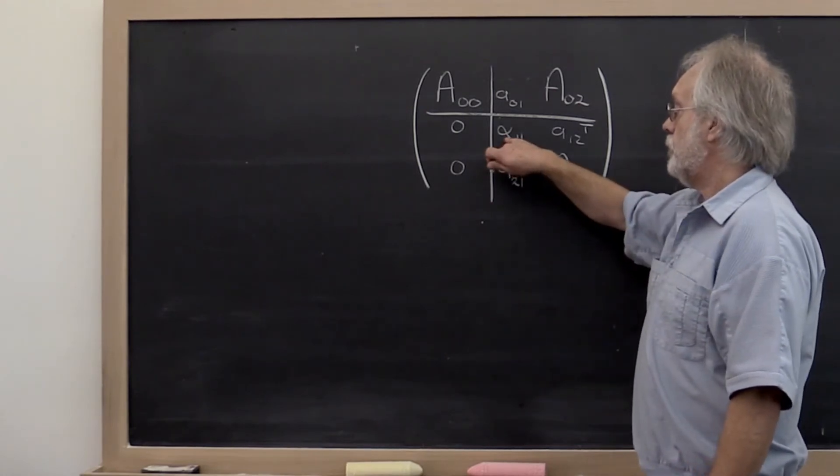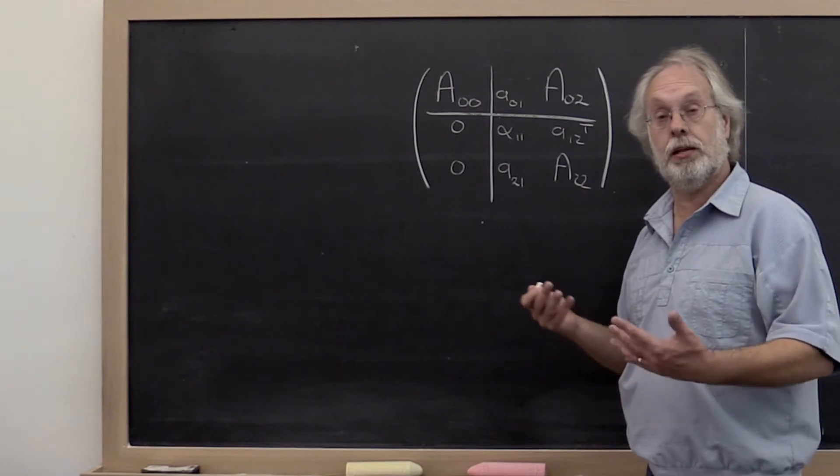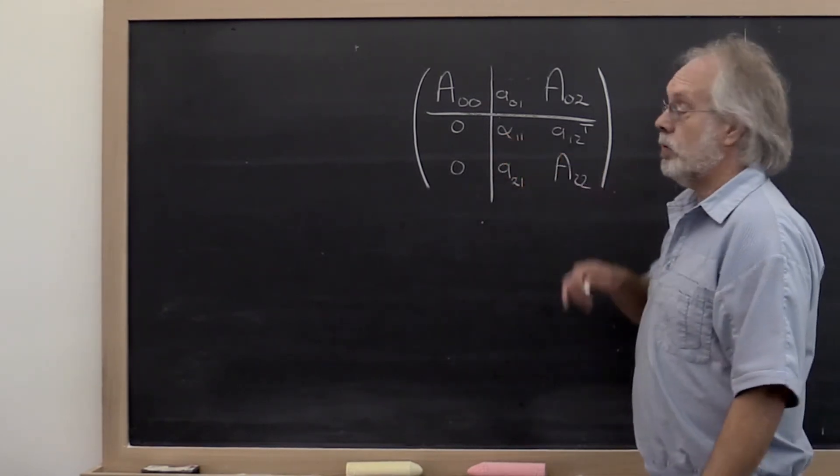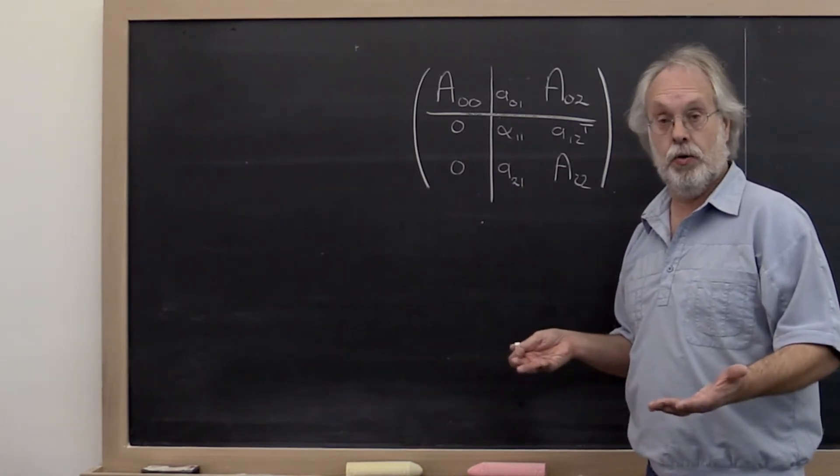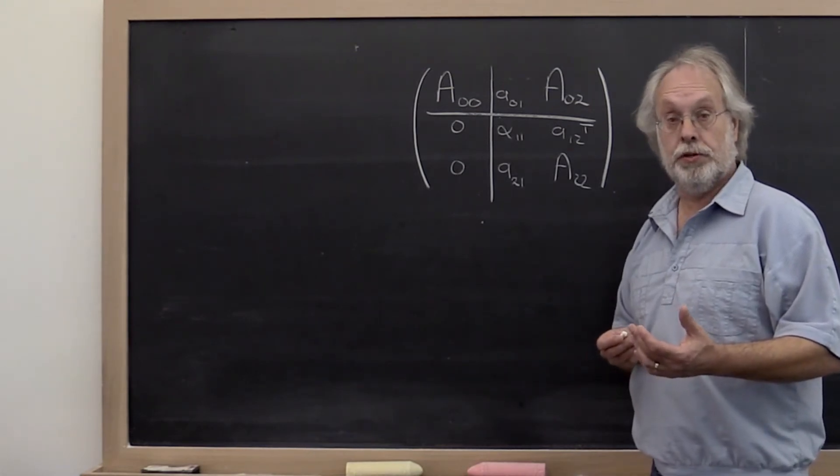But we may run into the situation where alpha 1 1 is exactly equal to 0, so we would end up dividing by 0. Or alpha 1 1 in magnitude is very small, so that it acts like a 0. And that itself can lead to trouble down the line.